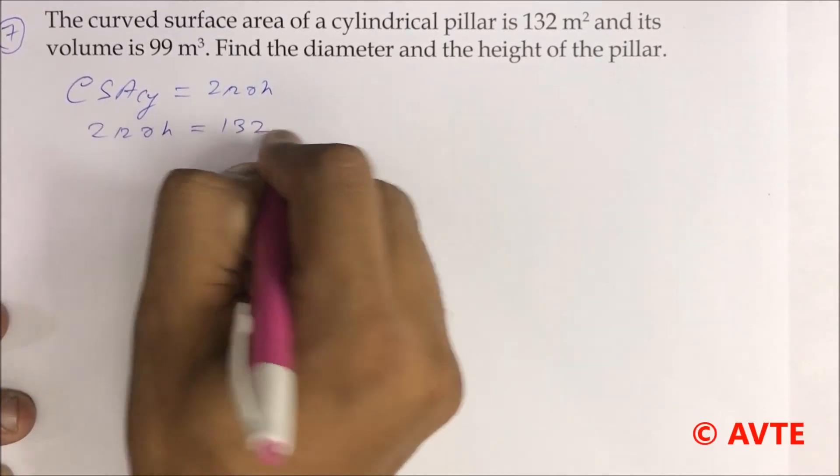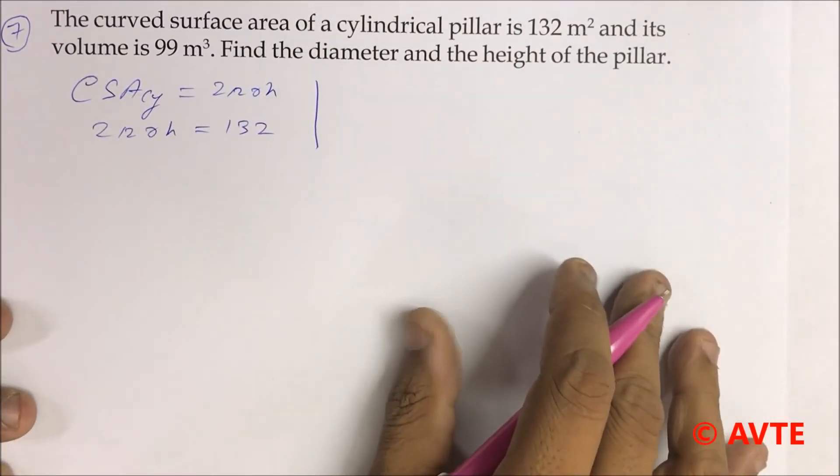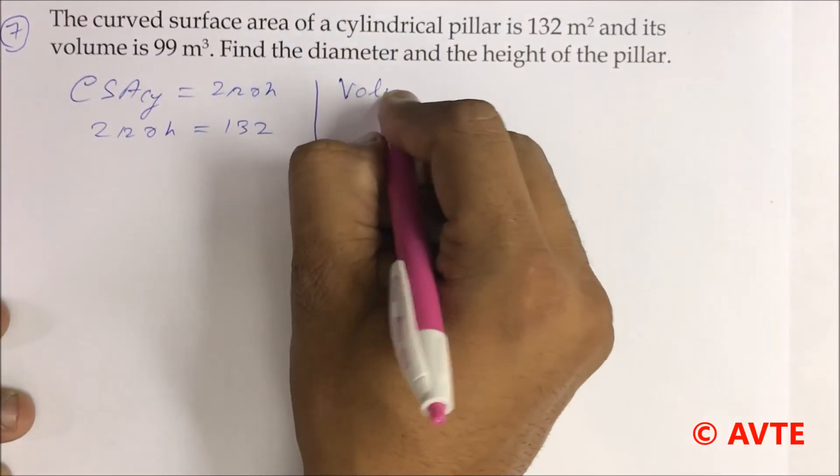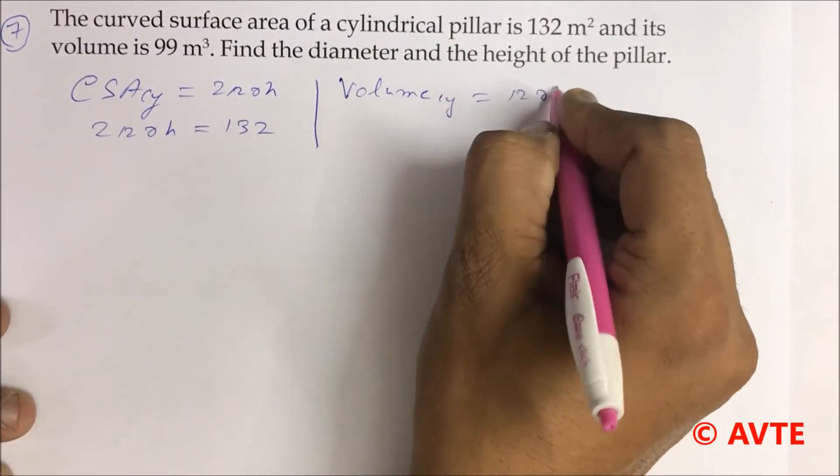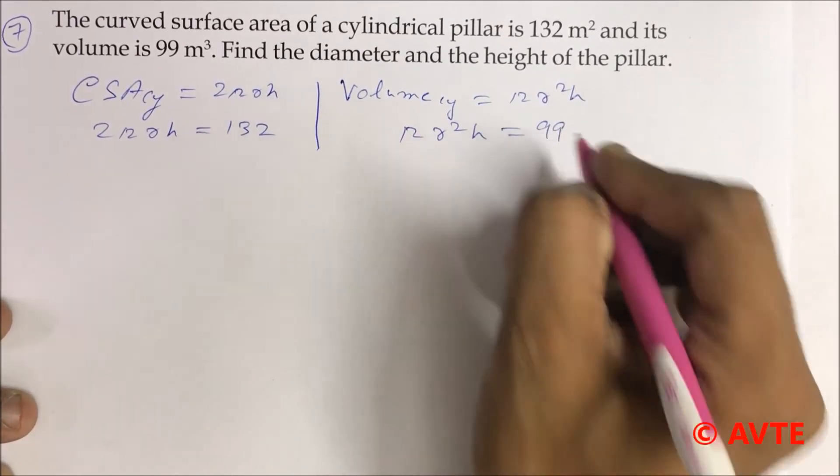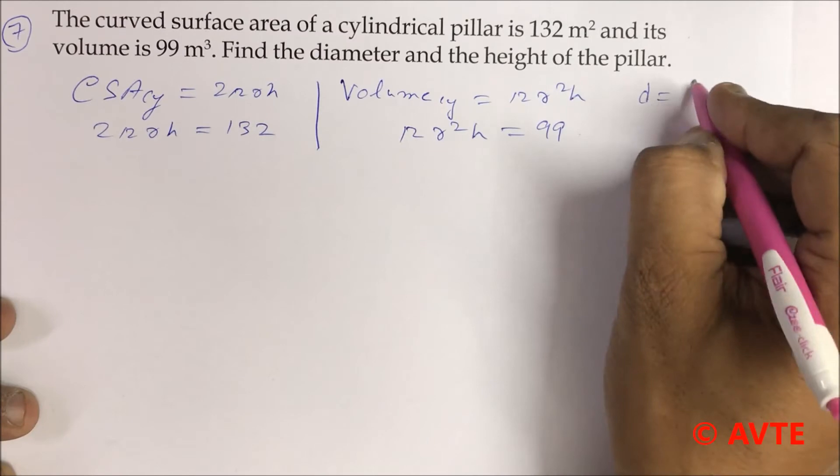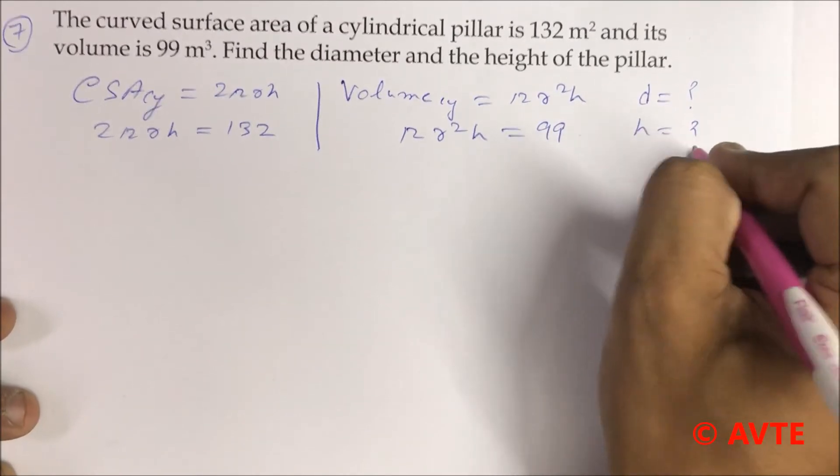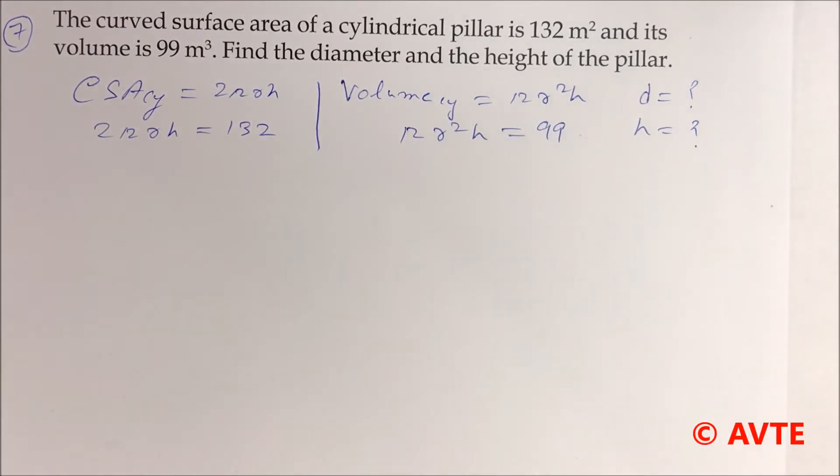The volume of the cylinder is πr²h, which is given as 99. We have to find the diameter and the height of the given cylinder.